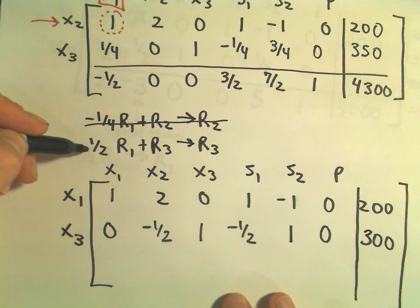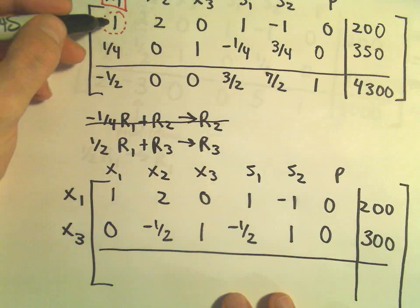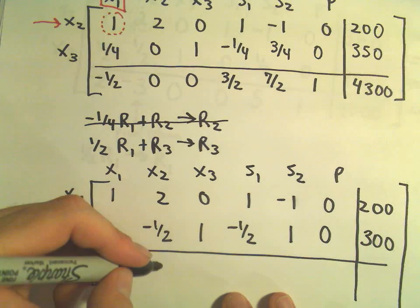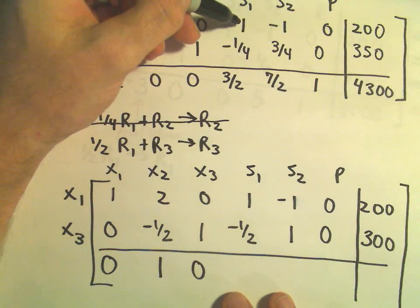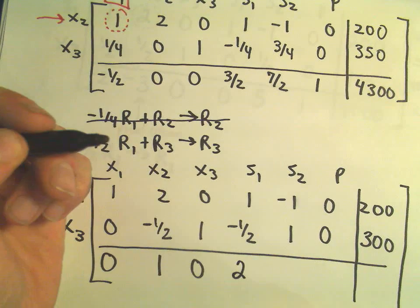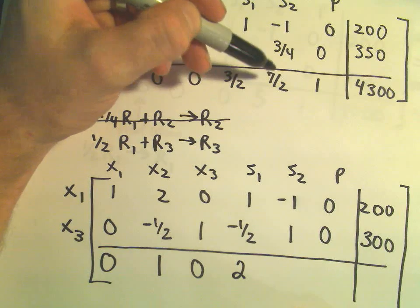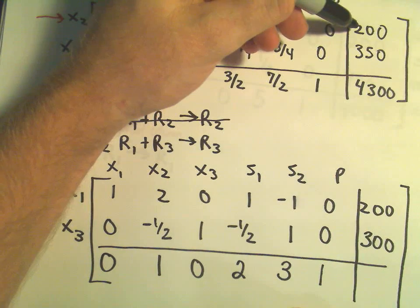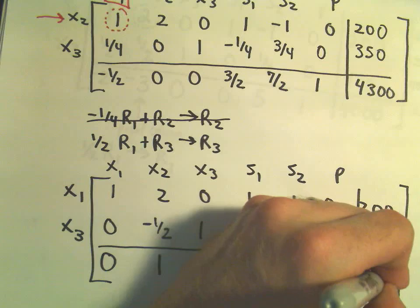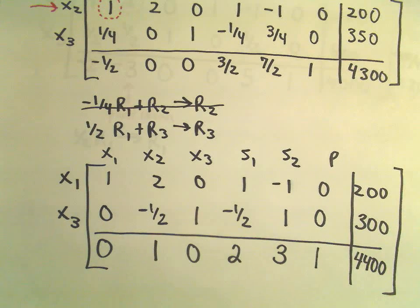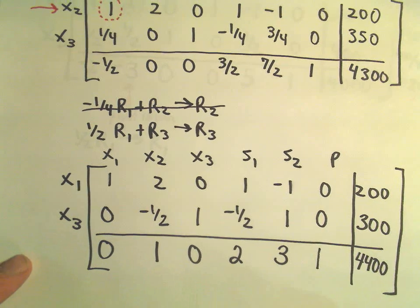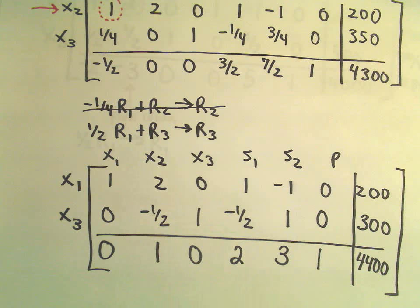Next, I take one-half times row 1 and add it to row 3. One-half plus negative one-half is zero. One-half times 2 is 1 plus 0, or 1. Zero plus zero is zero. One-half plus three-halves is four-halves, or 2. Negative one-half plus seven-halves is six-halves, or 3. Zero plus 1 is 1. And one-half of 200 is 100, plus 4,300 gives us 4,400. Hooray — we are done, because there are no negative numbers in the bottom row. We can now interpret our result, which we'll talk about in another video.